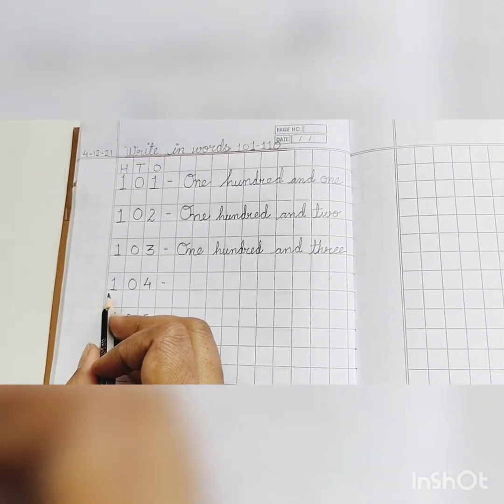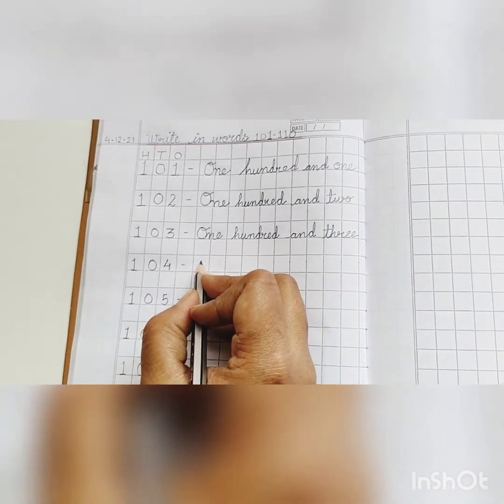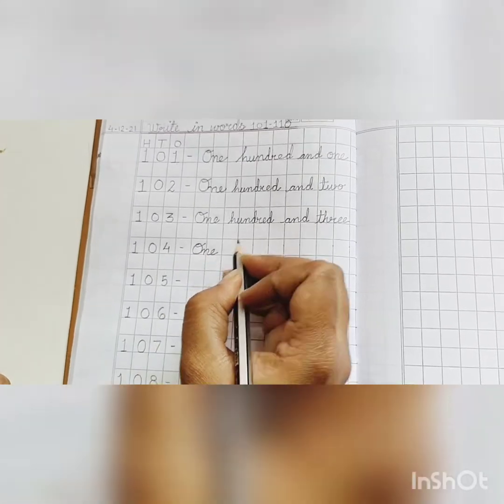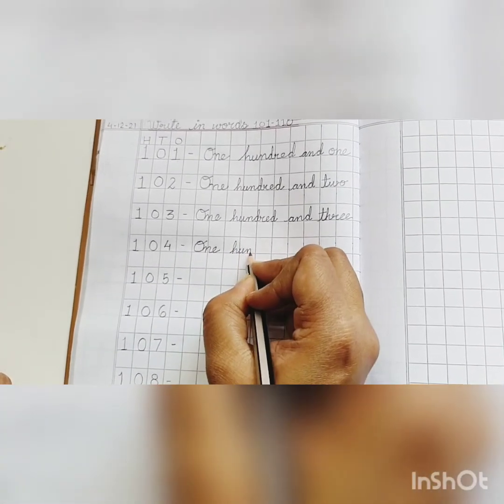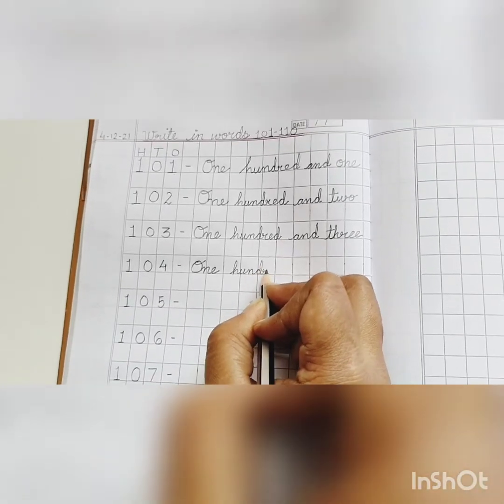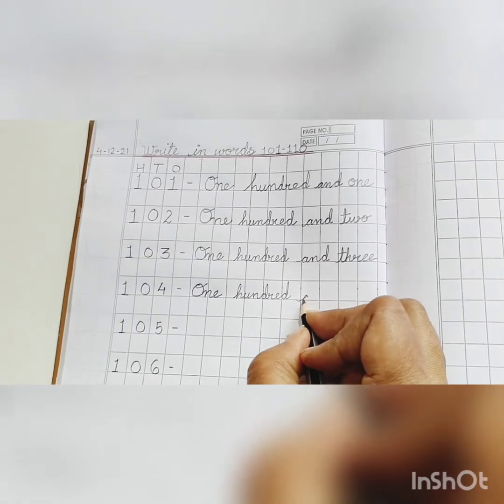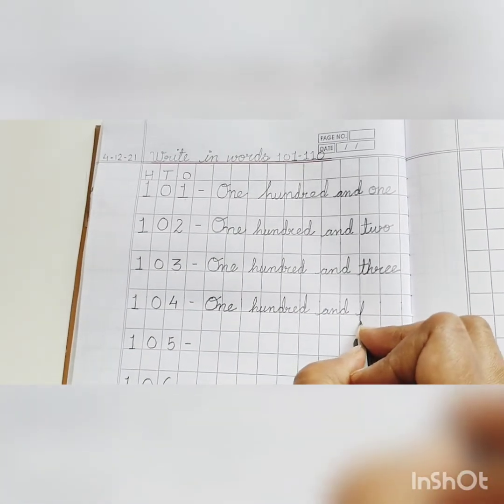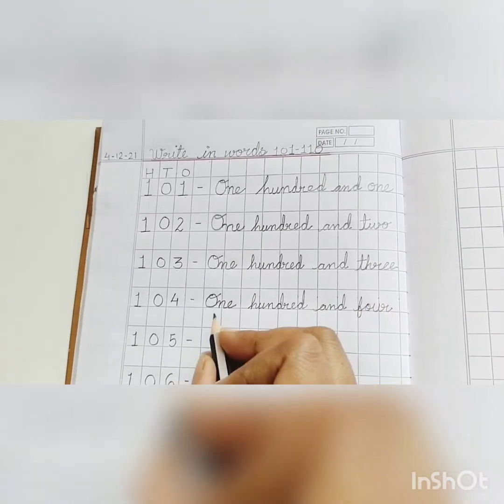Next, one hundred and four. O-N-E, 1, H-U-N-D-R-E-D, 100. A-N-D and F-O-U-R, 4, 104.